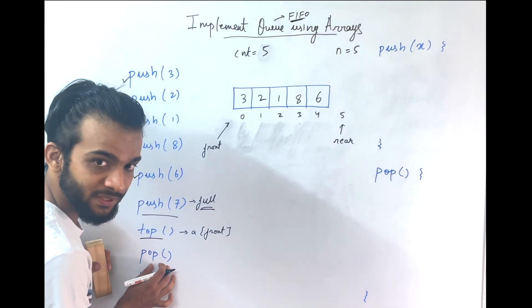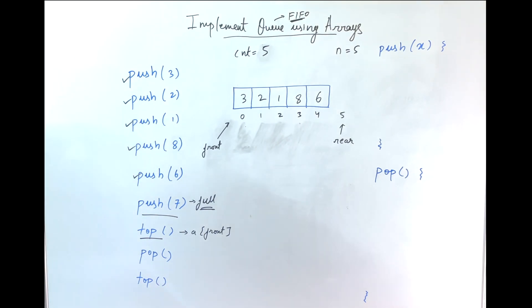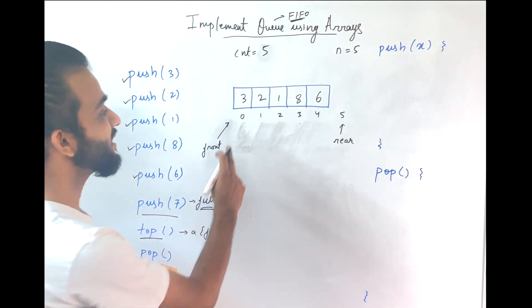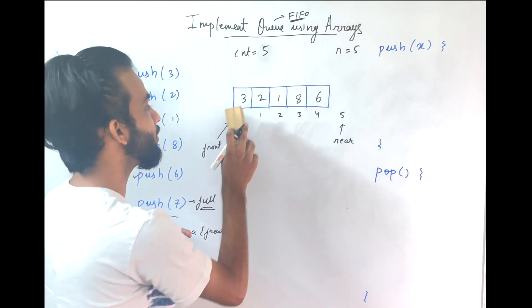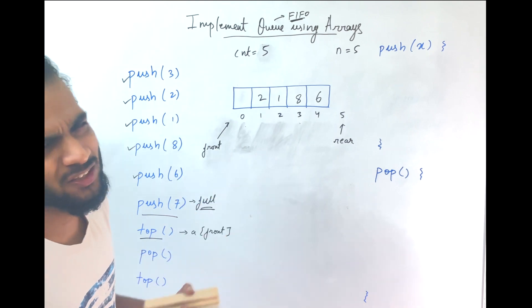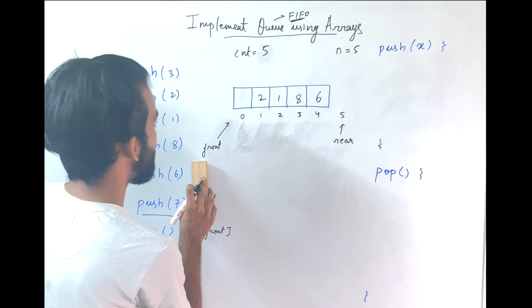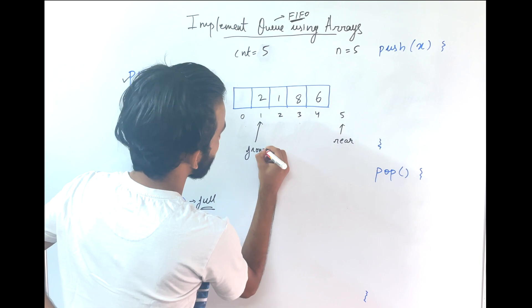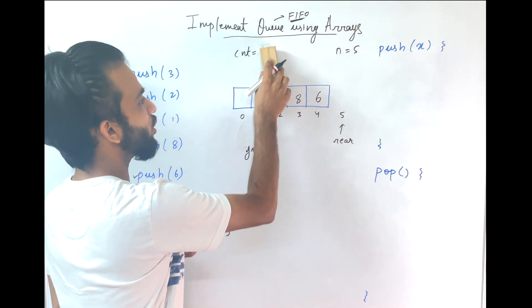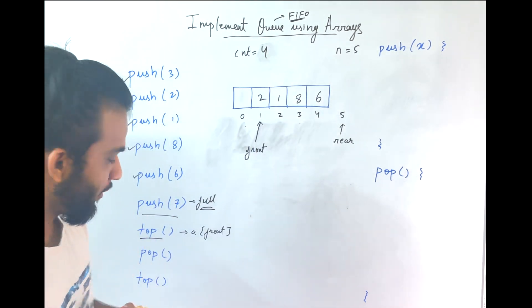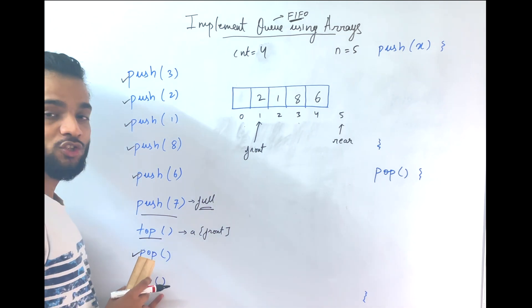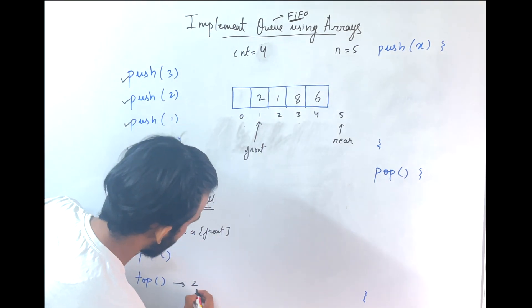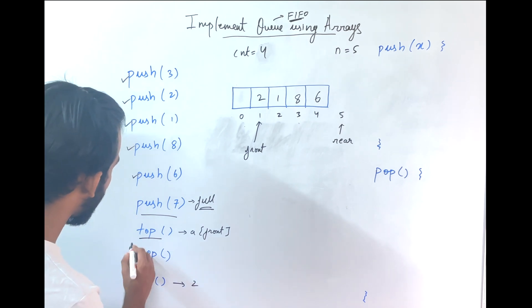If asked to pop: since it's first in, first out, element 3 has to go. Assign a dummy value (like -1) to that position, then move the front pointer forward and reduce count to 4. If top is asked again, wherever front is pointing — that's 2 — so top returns 2. That is how you perform all these operations.